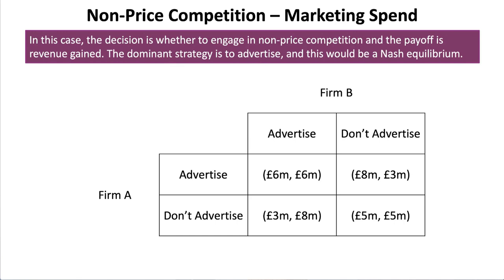Here we're going to use game theory to explore non-price competition and the scenario of marketing expenditure. In this case, the decision is whether to engage in non-price competition and the payoff is the revenue that's gained. If you interrogate the figures, you'll see that the dominant strategy is to advertise, receiving a payoff of six million pounds each — and this would be the Nash equilibrium. This is the outcome from which the firm has pursued its best possible strategy given the strategy that their competitor undertakes as well.